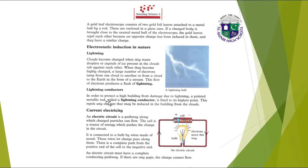Lightning conductors: in order to protect a high building from damage due to lightning, a pointed metallic rod called a lightning conductor is fixed to its highest point. This repels any charges that may be induced in the building from the clouds. Next we have the concept of current electricity.